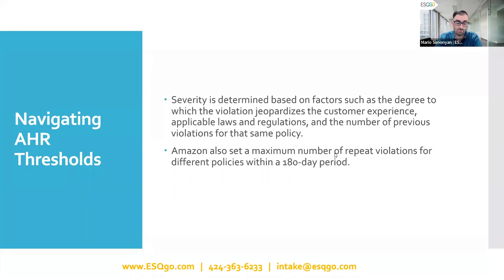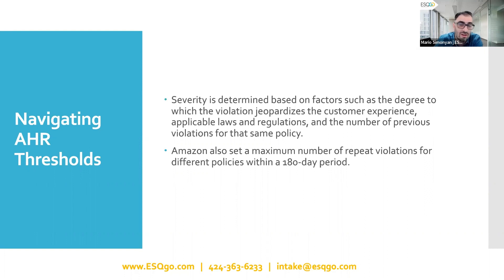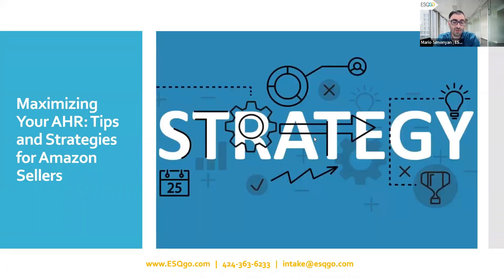What you don't want to do is say, 'I've got two violations, I'll just wait until 180 days expires and then they'll drop off.' You never know what can happen tomorrow or the next hour with Amazon — and most of you guys already know that. So as far as strategy, what do you do?